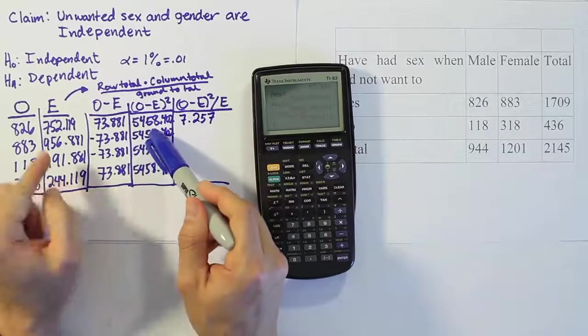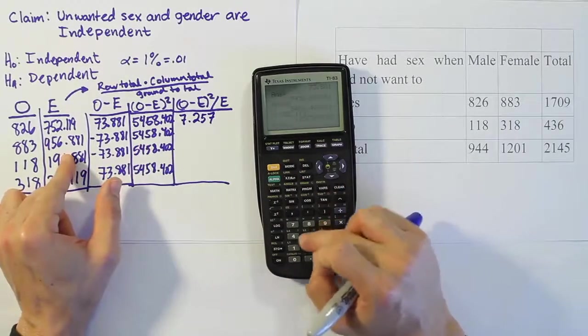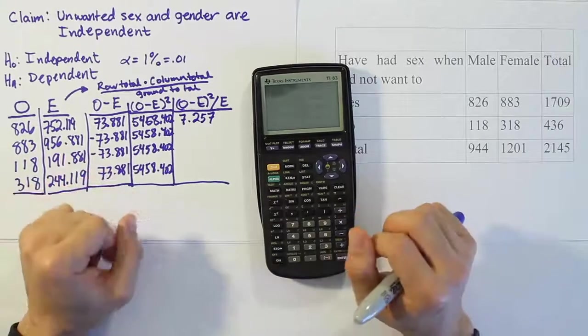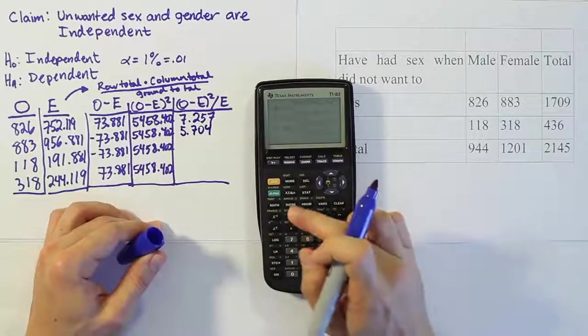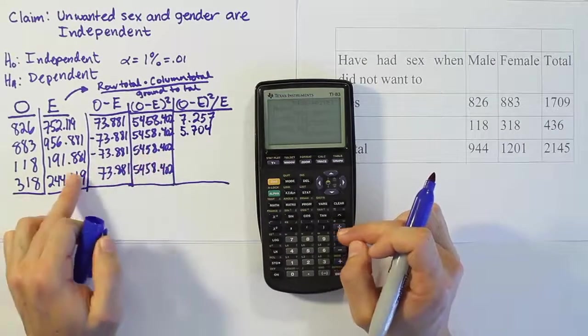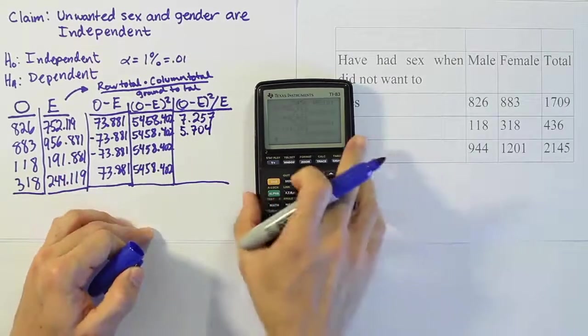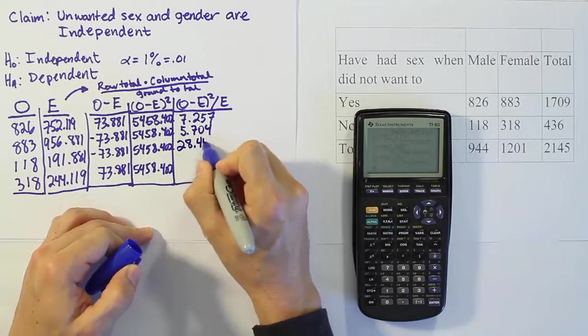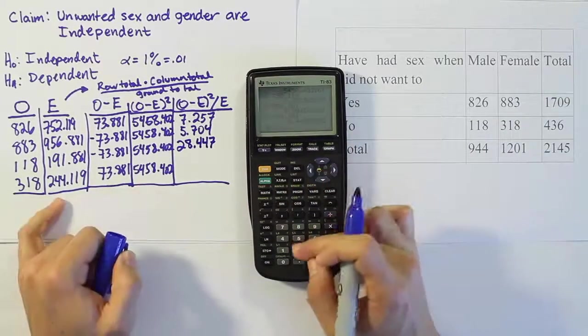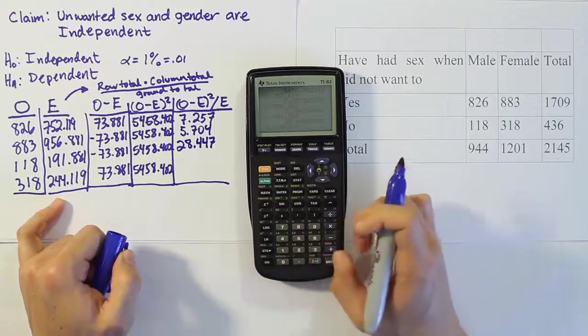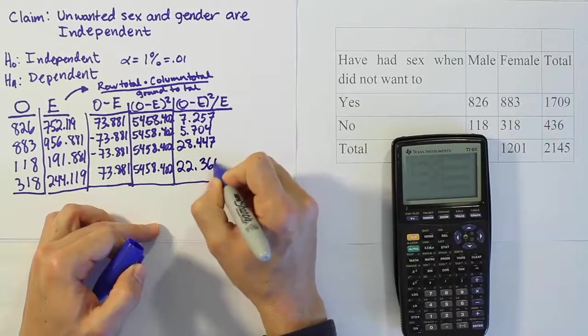Let's do it again this time for this number divided by this number. That 5458 number I have stored in my calculator divided by 956.881. We get 5.704. Then we do it again, same number divided by 191.881. We get the answer 28.447. And then the last one, the 5458 number divided by 244.119, we get 22.360.